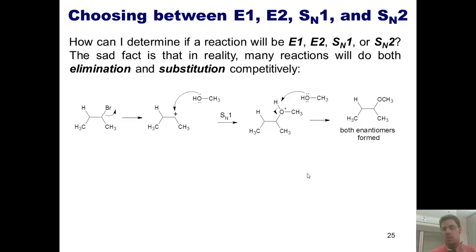As we discussed in our previous chapter's coverage of substitution, this reaction scenario is going to give us both enantiomers, rather than a complete inversion of stereochemistry, as we would see in an SN2 scenario.